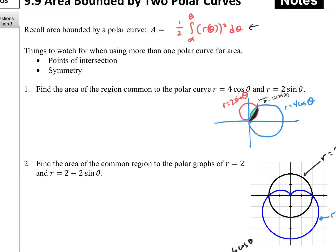My first integral will start with a sine. Once the angle is zero, I'm inside that red graph, and that's true until I get to the value A. That's going to be inside the red graph, which is 2 sine theta. Then after that, I'm adding the area that starts at A and goes to where the blue graph intersects the pole. Where 4 cosine theta equals 0 is at pi over 2. For the purposes of this video, I'm just interested in setting up the integrals.